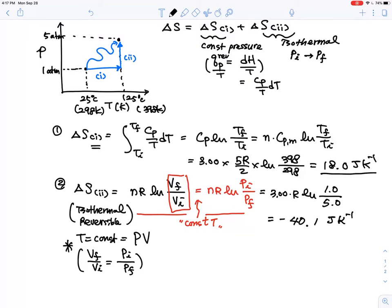Therefore, delta S for this process is 18.0 minus 40.1, and that is, I'll just round it off, that will be the answer, and that's about minus 22 joules per Kelvin.